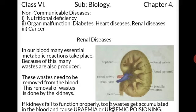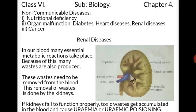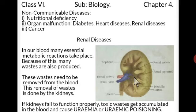If kidneys fail to function properly, toxic wastes get accumulated in the blood and cause diseases like uremia and uremic poisoning. These are developed due to the failure of the proper function of kidneys. The symptoms of uremia include loss of appetite, loss of mental concentration, fatigue — meaning getting tired very easily — lethargy, meaning the patient does not want to work too much, and dry, flaky skin.